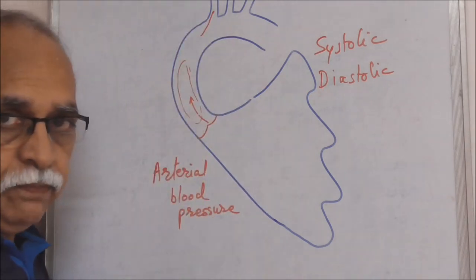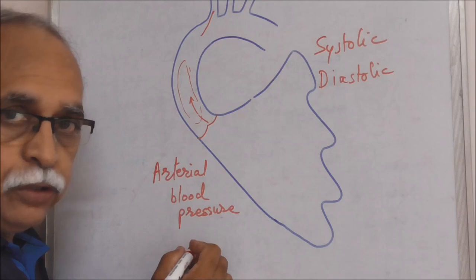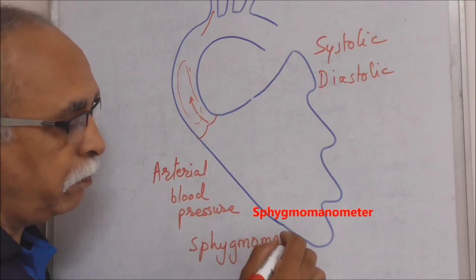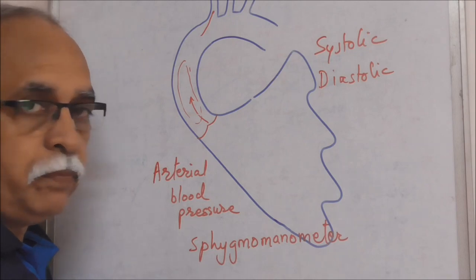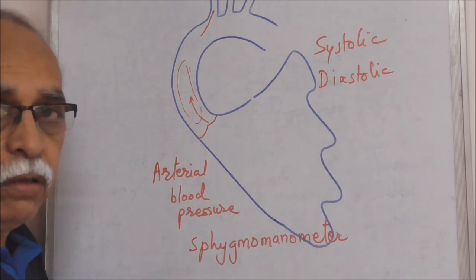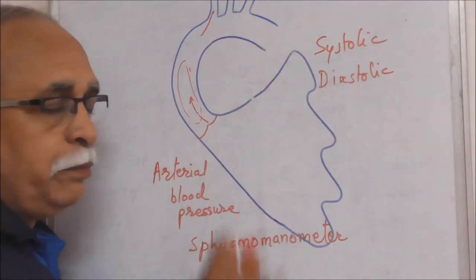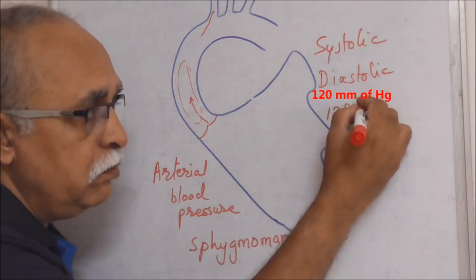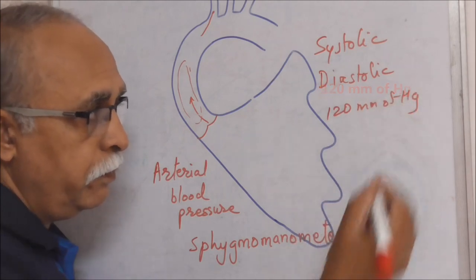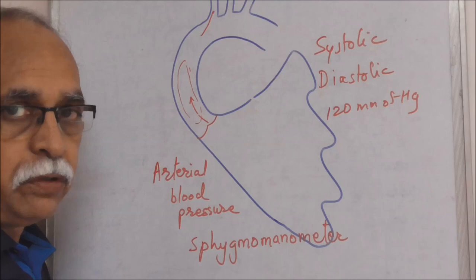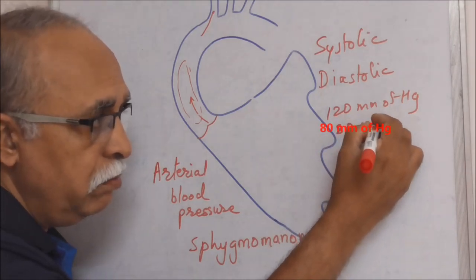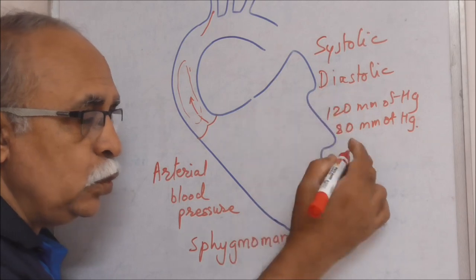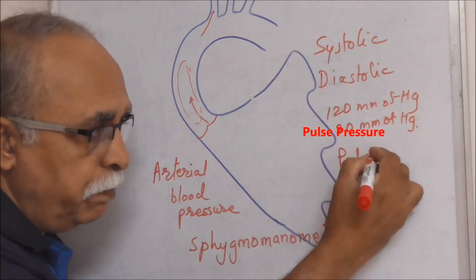The instrument used for measuring arterial blood pressure is called a sphygmomanometer. Systolic blood pressure in a healthy individual is seen to be 120 millimeters of mercury, while diastolic blood pressure for the same healthy individual is around 80 millimeters of mercury. The difference between these two — around 40 millimeters of mercury — is called pulse pressure.